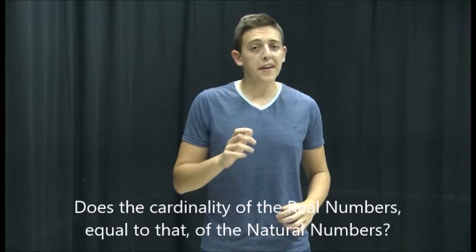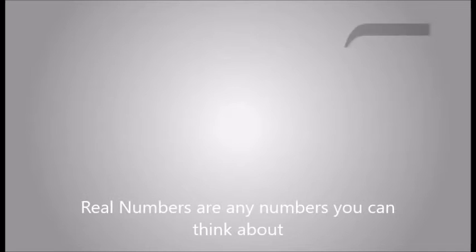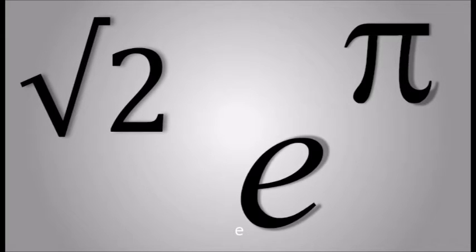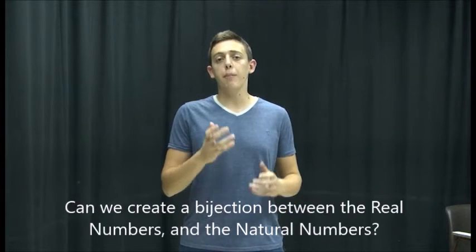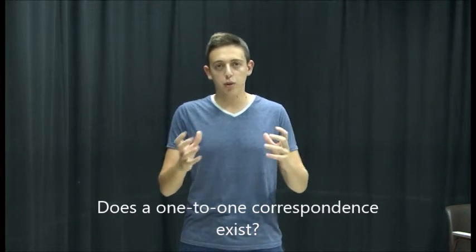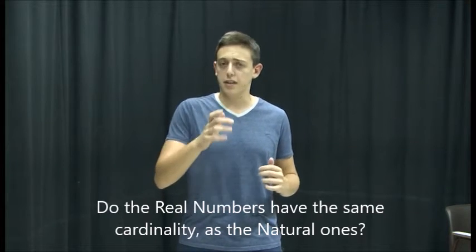Does the cardinality of the real numbers equal to that of the natural numbers? Real numbers or any number you can think about, pi, square root of 2, e, are all real numbers. Can we create a bijection between the real numbers and the natural numbers? Does a 1 to 1 correspondence exist? Do the real numbers have the same cardinality as the natural ones?